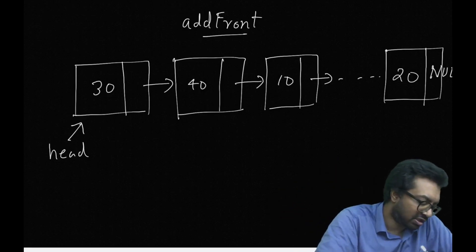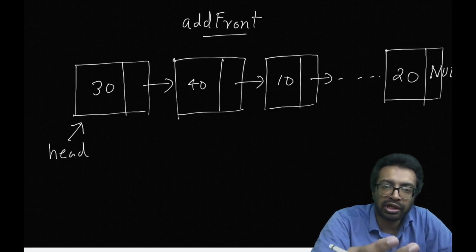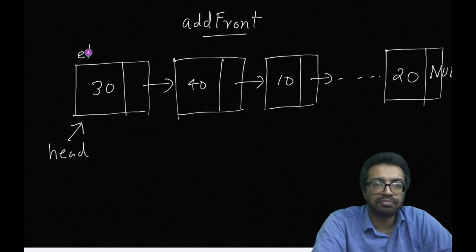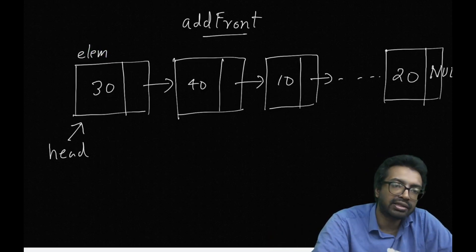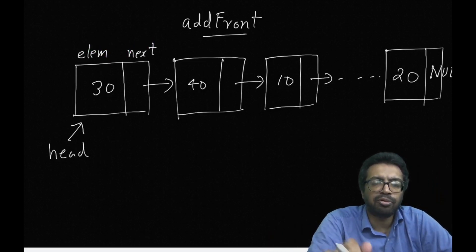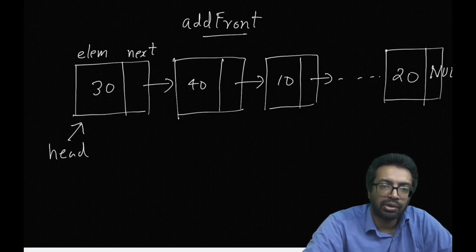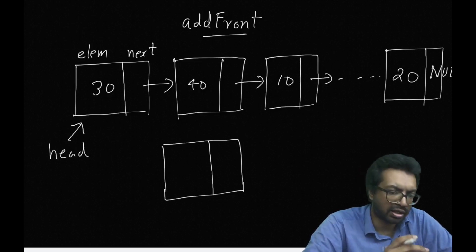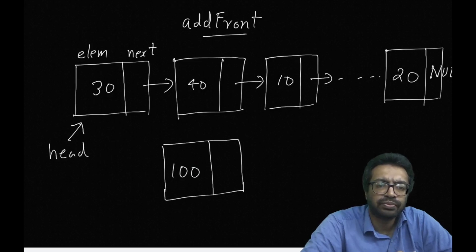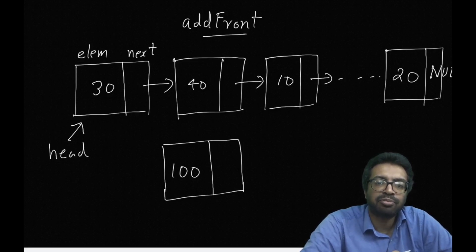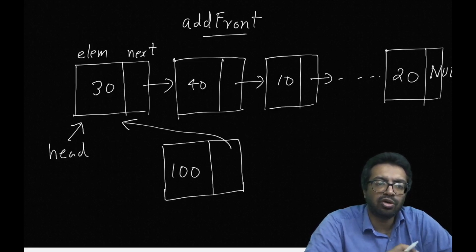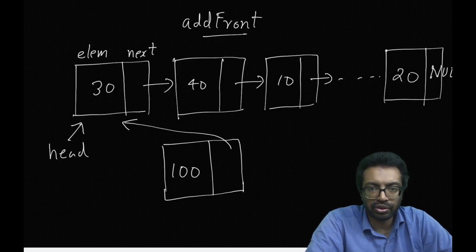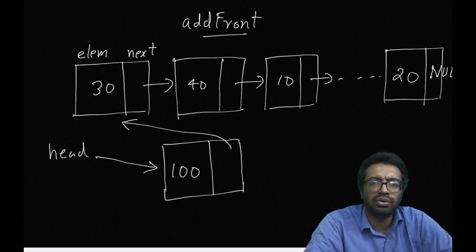The pointer in the node of 100 should be pointing to node 30. A node contains two things: the first part is the element, we call it 'elm', and the second part is called 'next', which is a pointer to another node. To insert 100, I first create a new node and add 100 to its element part. Then this node's next should point to where head is currently pointing, and finally I make head point to this newly created node. Now 100 is at the front of the list.